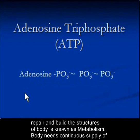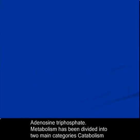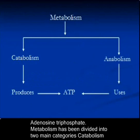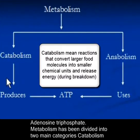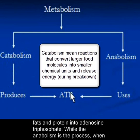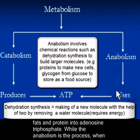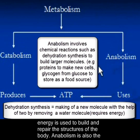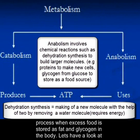The body needs a continuous supply of adenosine triphosphate. Metabolism has been divided into two main categories: catabolism and anabolism. Catabolism is the process of conversion of food components like carbohydrates, fats, and proteins into adenosine triphosphate. Anabolism is the process when energy is used to build and repair the structures of the body, and also when excess food is stored as fat and glycogen in the body.